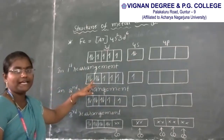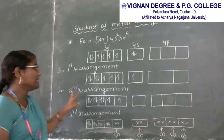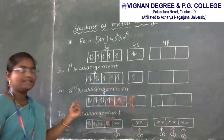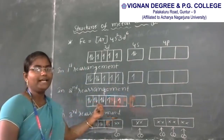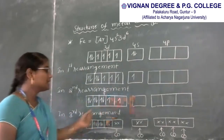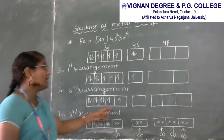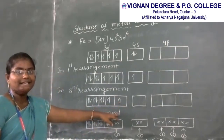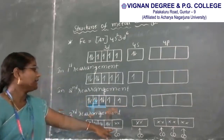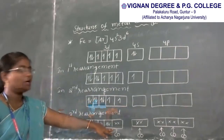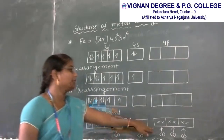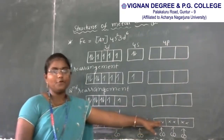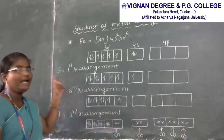In the second rearrangement, the remaining unpaired electron in 4S is also excited to its 3D orbital. In the third rearrangement, an unpaired electron in 3D is excited within its shell, forming 5 equivalent vacant orbitals which form 5 bonds with 5 CO molecules, giving iron pentacarbonyl.